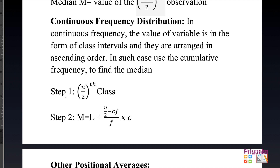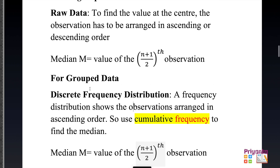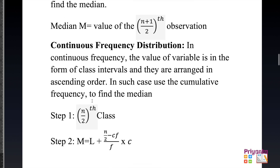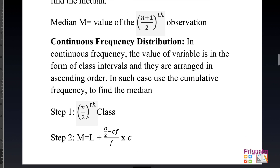For continuous frequency distribution, the formula is divided into two steps. Step 1: find n/2 to identify the median class. Step 2: Median = L + [(n/2 − CF) / f] × h, where L is the lower limit, CF is cumulative frequency, f is the frequency, and h is the class length. Note: for raw data and discrete, use (n+1); for continuous, use n directly.